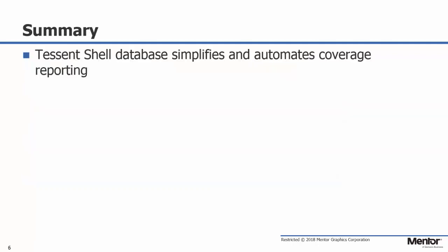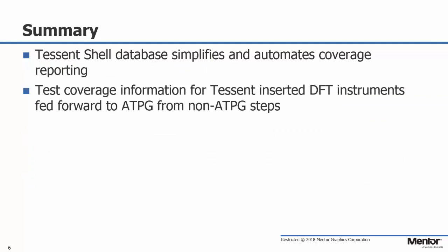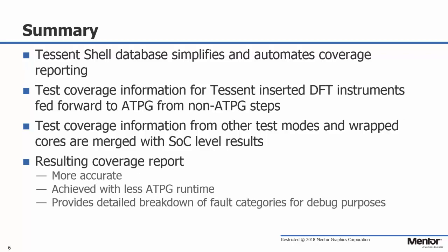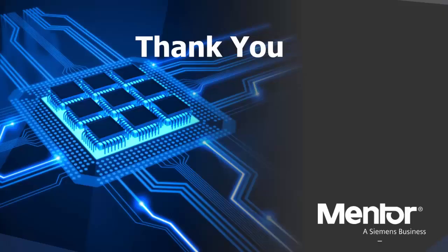In summary, Tessin Shell simplifies and automates coverage reporting. The test coverage information for Tessin-inserted DFT instruments is fed forward to the ATPG step from non-ATPG steps in the flow. Test coverage information from multiple test modes and separate cores is merged with the SoC-level results. The resulting coverage report is more accurate because we can include coverage results from non-ATPG steps. We achieve that with less ATPG runtime because some faults can be pre-categorized. And to simplify debugging, we provide detailed breakdowns based on fault subcategories and hierarchies. Thank you for viewing this video — please be sure to view parts two and three of the series for a more detailed demonstration with the sample design.